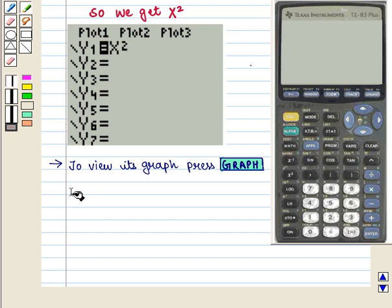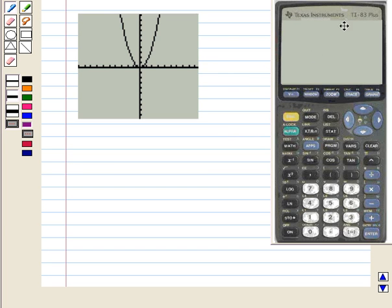To view the graph, press the graph key. On the screen, the graph of Y equals X squared will appear on the coordinate axis. We see that it is an upward facing parabola.